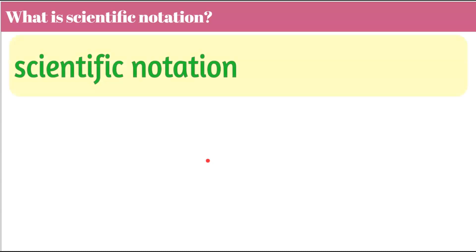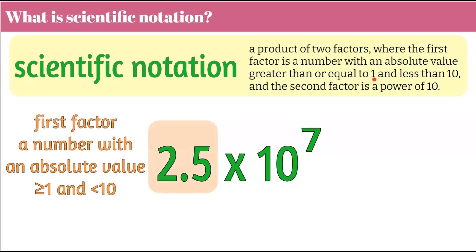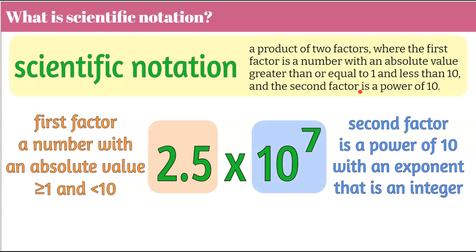Let's begin with reviewing what is scientific notation. Scientific notation by definition is a product of two factors where the first factor is a number with an absolute value greater than or equal to 1 and less than 10, and the second factor is a power of 10 with an integer exponent. The exponent can be positive or negative — integers include whole numbers, zero, and their opposites. So no fractions, only integers.